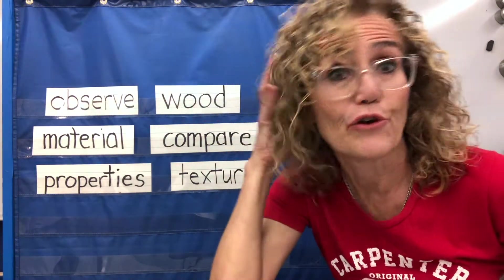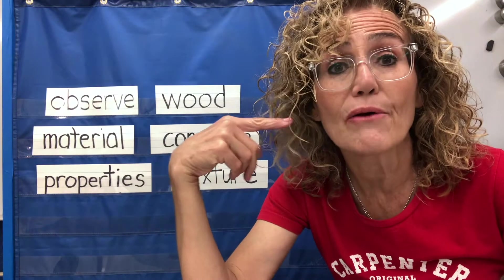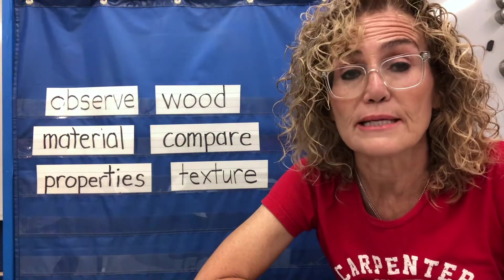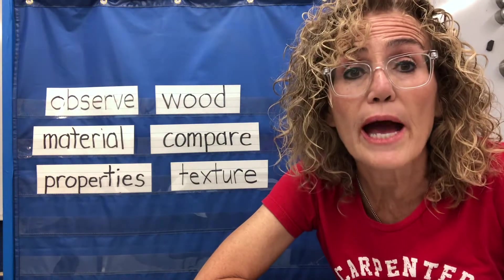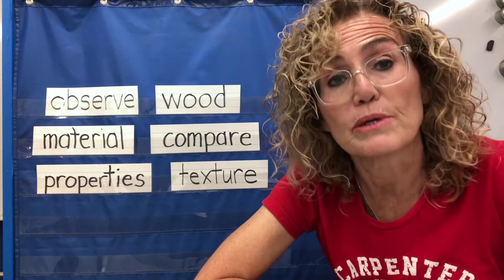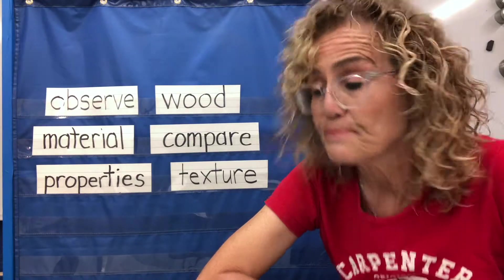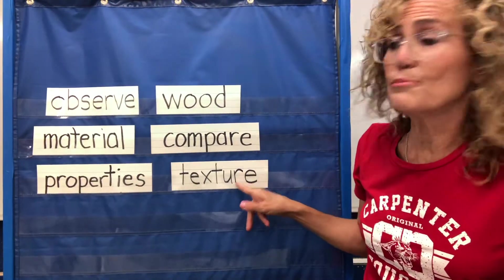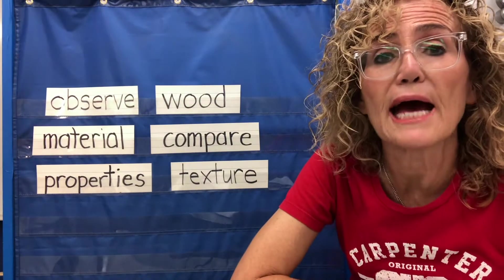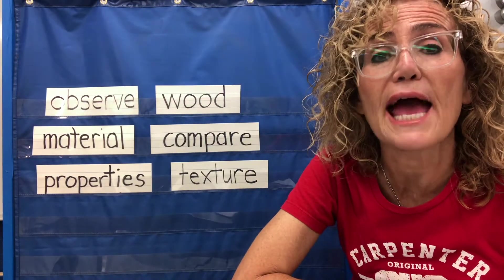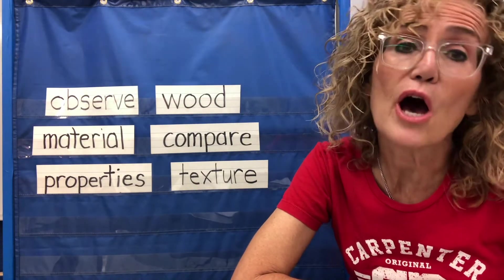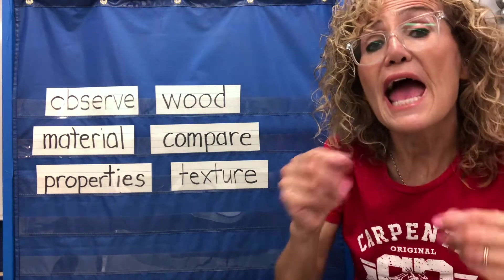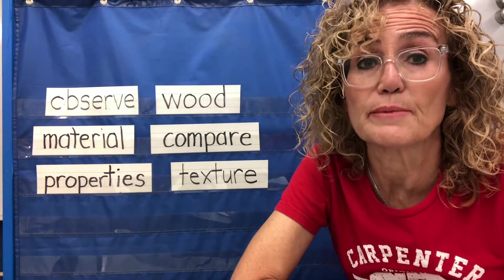So I have curly hair, and I have brown eyes, and I'm wearing a red shirt. Those are some of my properties. So how we describe something is what we're talking about when we talk about properties. And when we talked about properties, one of the most important things we talked about last week was the property of texture — whether it was soft or smooth, hard. So texture was a property that we talked about last week.